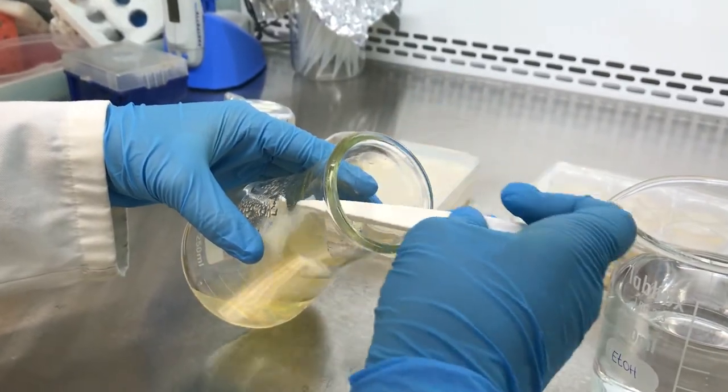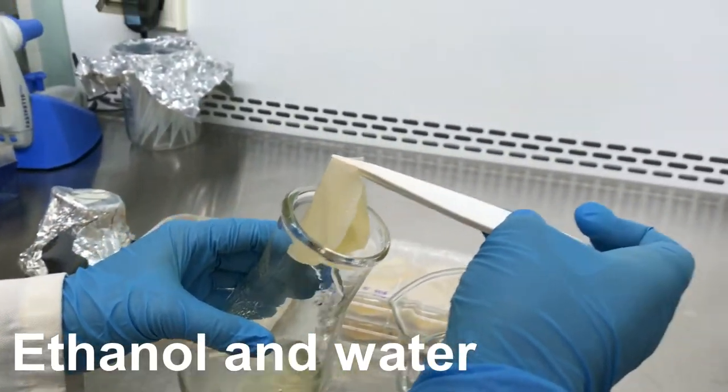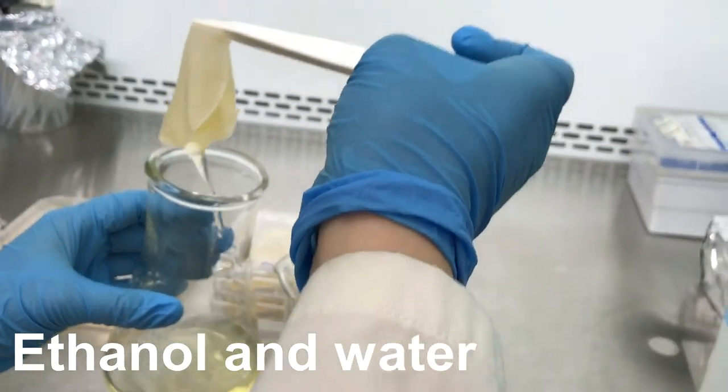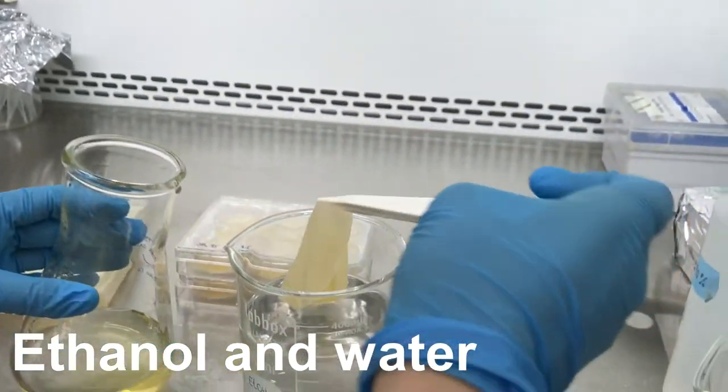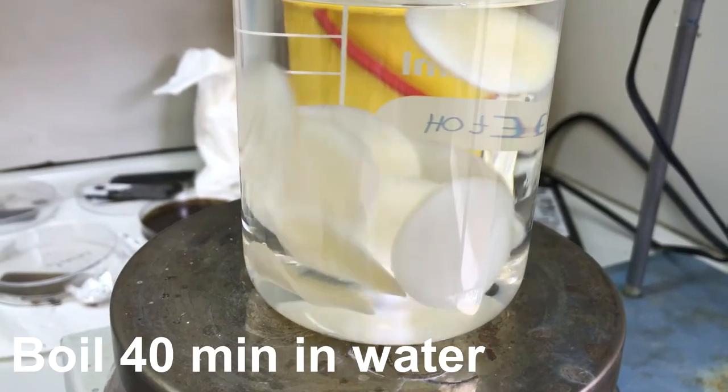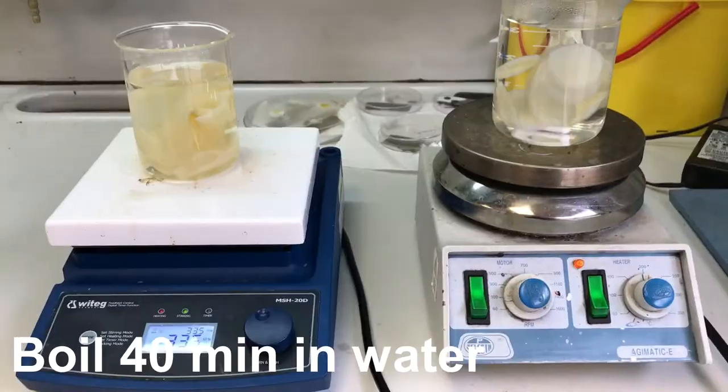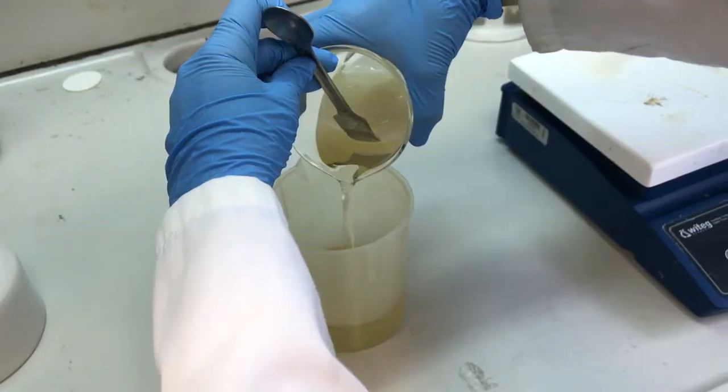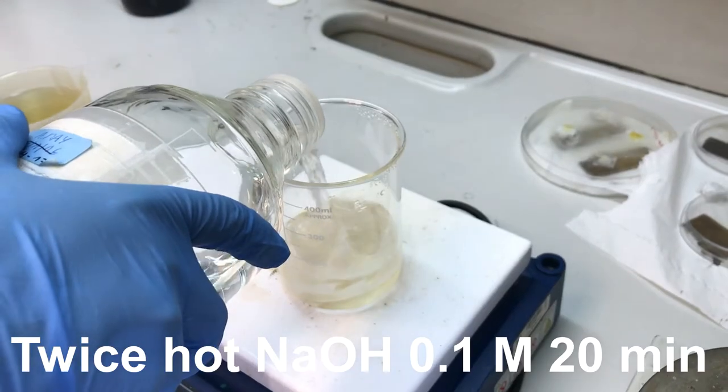And before using it, we need to clean the cellulose from the bacteria that remains on the film. To this end, we first place the cellulose in ethanol, and then we wash it with boiling water first, and then with hot sodium hydroxide, a strong base.